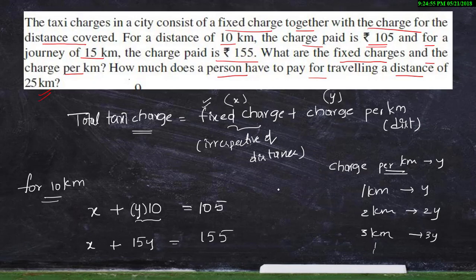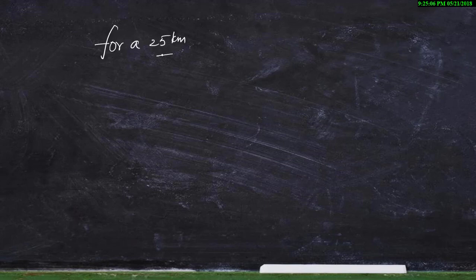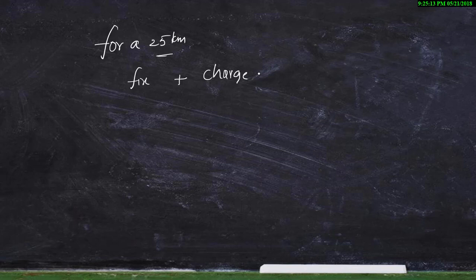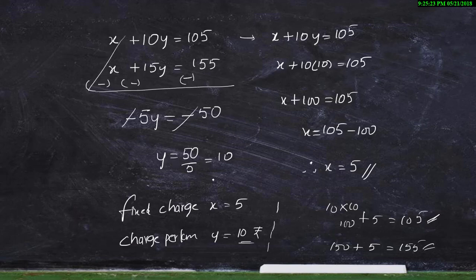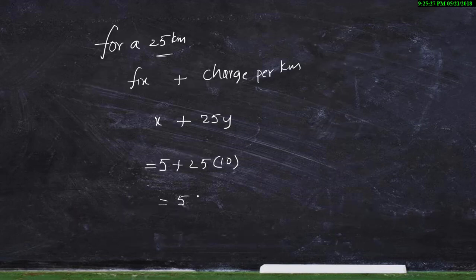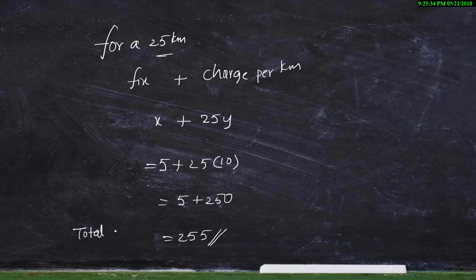Now what they are asking is how much a person has to pay for traveling a distance of 25 kilometers. For a 25-kilometer journey, the total charge is fixed charge plus charge per kilometer, that is x plus 25y, where x equals 5 and y equals 10. So it will be 5 plus 25 into 10 equals 5 plus 250, which equals ₹255. Total charge for 25 kilometers is ₹255.